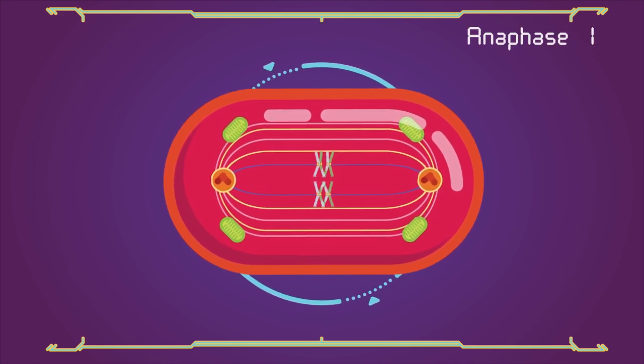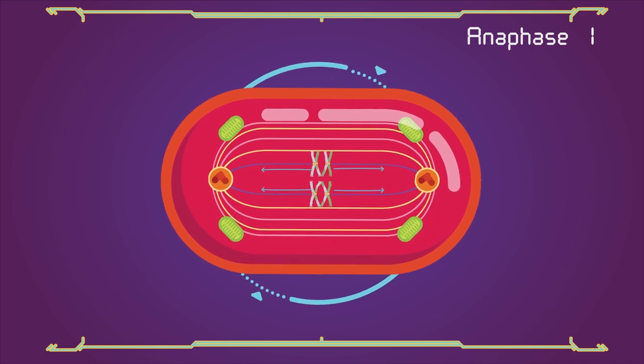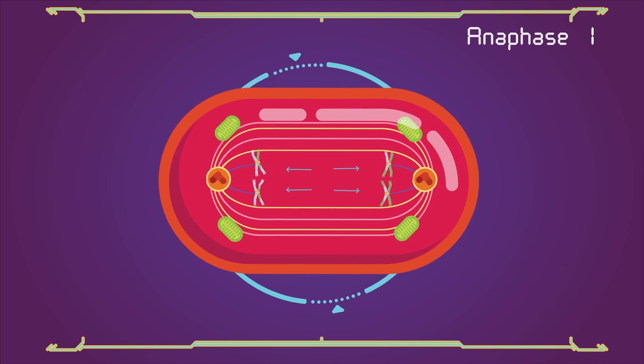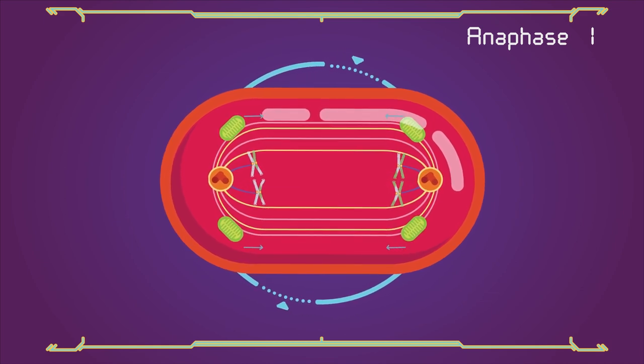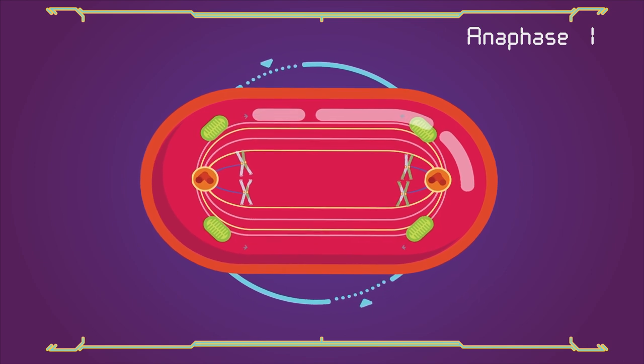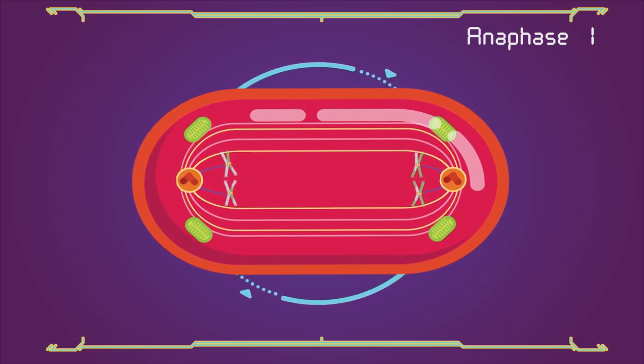Anaphase 1: Kinetochore microtubules shorten, pulling homologous chromosomes, which consist of a pair of sister chromatids, to opposite poles. Non-kinetochore microtubules lengthen, pushing the centrosomes further apart. The cell elongates in preparation for division down the center.